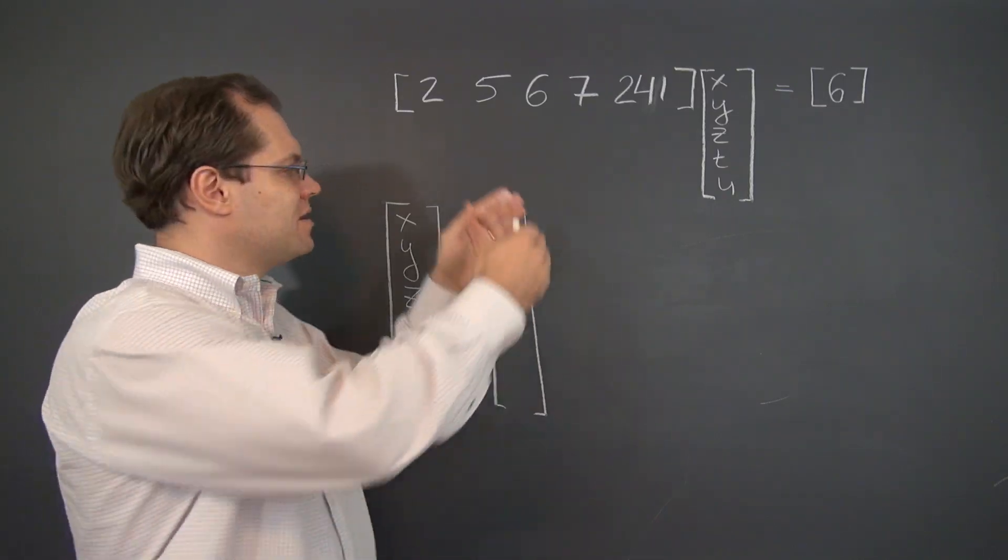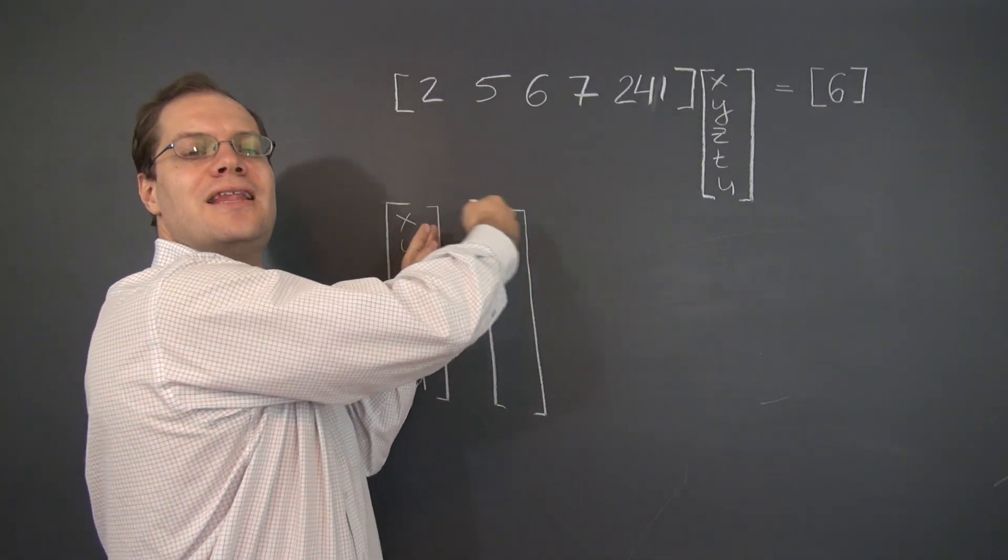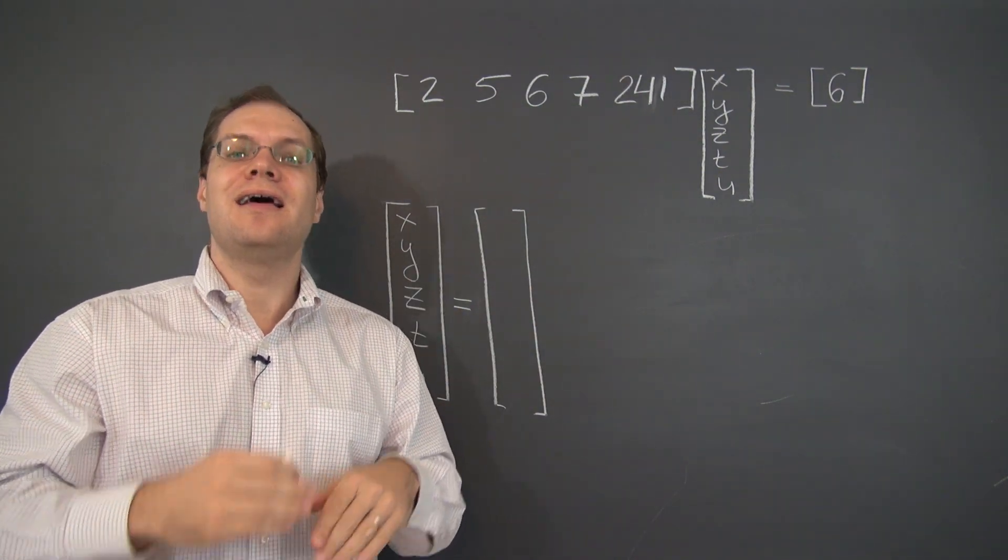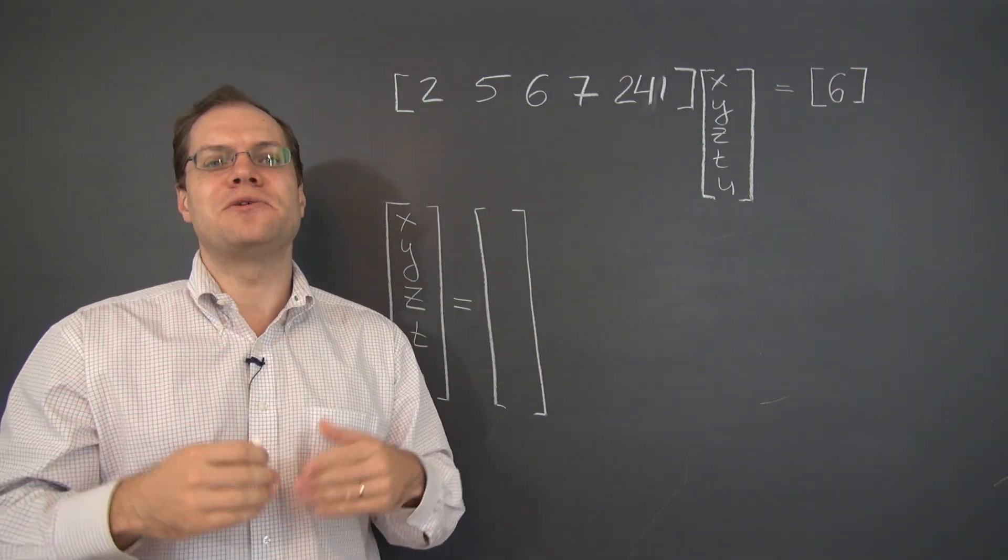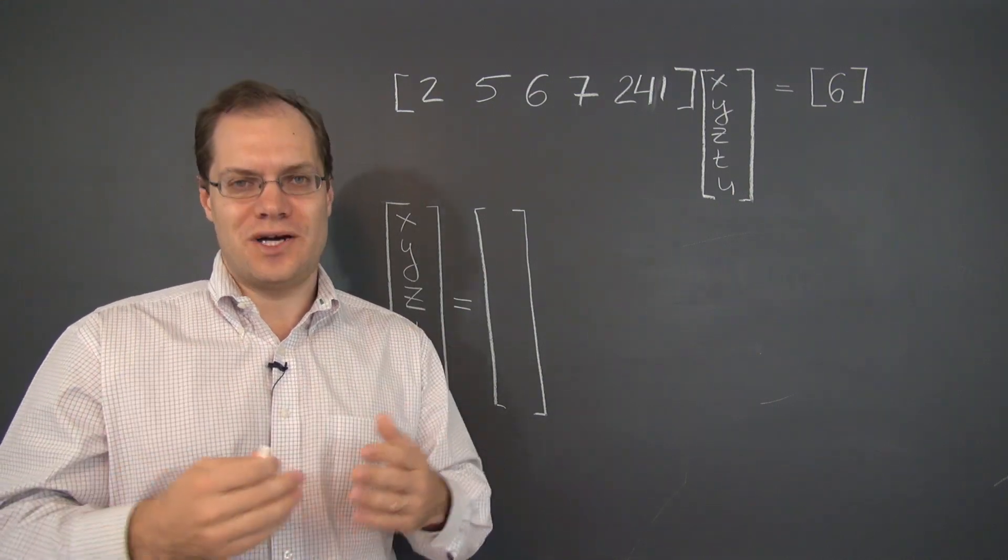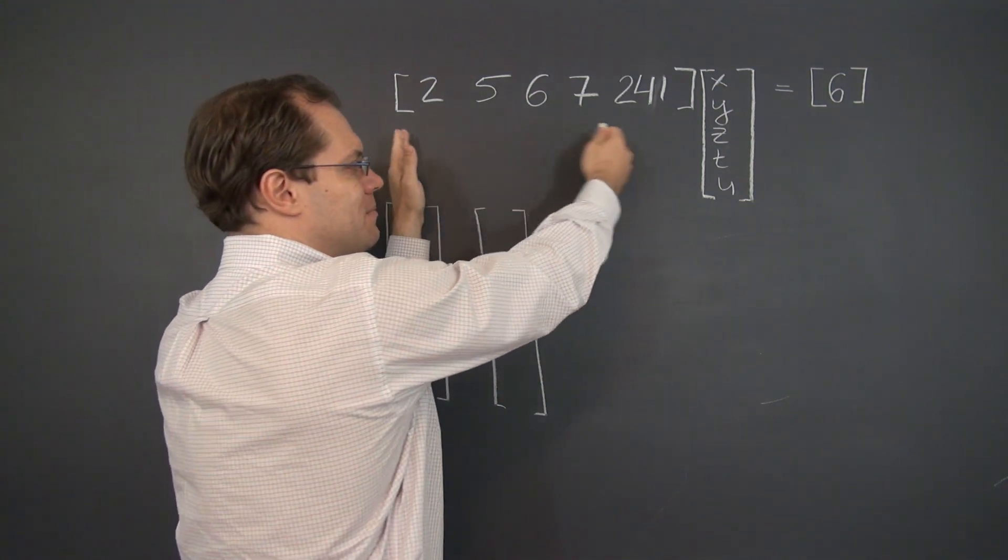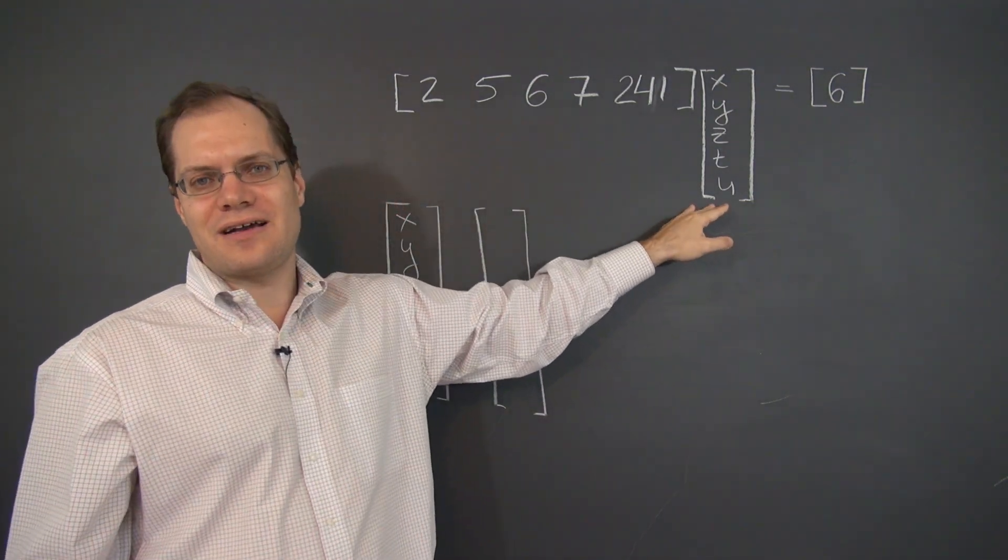So we have previously solved a system that was tall and not very wide. In other words, it had very few variables and many equations, and we were very lucky to even find one solution. Now we have a system that actually has very many variables, 5 in fact.